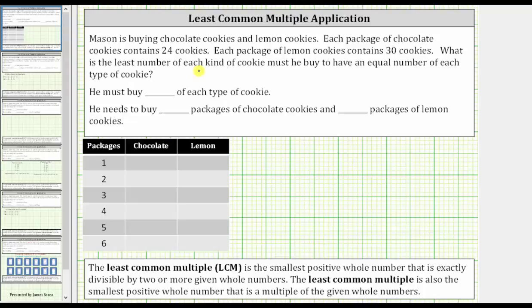There are a couple ways to answer this question. We will answer it using the table below, where the first column has the number of packages, the second column records the number of chocolate cookies, and the third column records the number of lemon cookies. Remember, each package of chocolate cookies contains 24 cookies, and each package of lemon cookies contains 30 cookies.